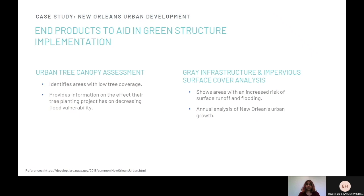Four end products were produced from this case. The first is the Urban Tree Canopy Assessment, which allows users to identify areas with lower tree coverage and provides information on the difference their current tree planting project has on decreasing flood vulnerability in New Orleans. Secondly, their gray infrastructure and impervious surface cover analysis shows areas with an increased risk of surface runoff and flooding based on impervious land cover, and includes an annual analysis of New Orleans urban growth to learn about gray infrastructure's impact on land modification.